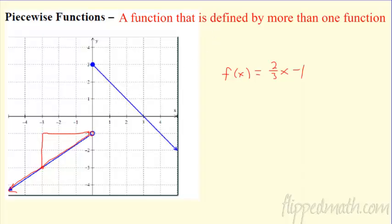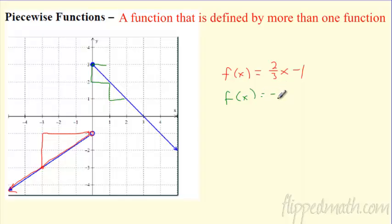Then what else do we have? Let's do a green function over here. I know it starts up here at three. What's its slope? It's going down one over one, down one over one every time. So this function over here is negative x. And then where does it start? It starts at plus three. So this green function over here is negative x plus three.